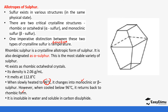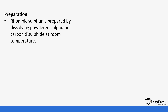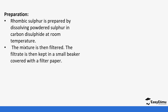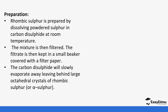Rhombic sulfur is insoluble in water but soluble in carbon disulfide — this is how it looks: octahedral in crystal form. It is prepared in the lab by dissolving powdered sulfur in carbon disulfide at room temperature. The mixture is filtered and the filtrate is kept in a small beaker covered with filter paper. Carbon disulfide slowly evaporates, leaving behind large octahedral crystals of rhombic sulfur.